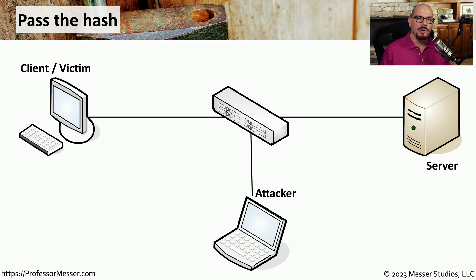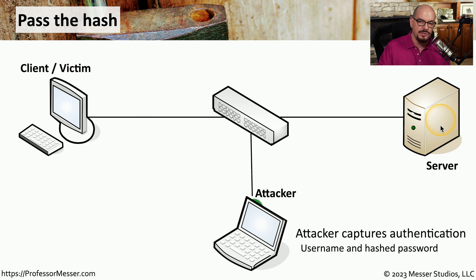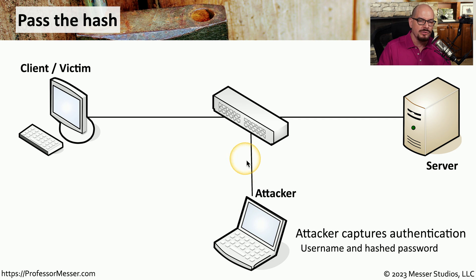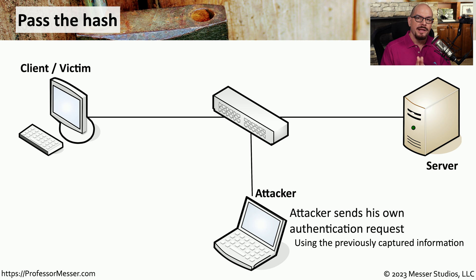One form of a replay attack is called pass-the-hash. The hash refers to a password hash normally used during the authentication process. This starts with the client sending a normal authentication request to a server. The attacker has put in place a way to redirect or get a copy of that traffic, capturing a username and a hashed password identical to what is being sent to the server. Once the attacker has this information, they can replay the username and hashed password back to the server posing as the original client.